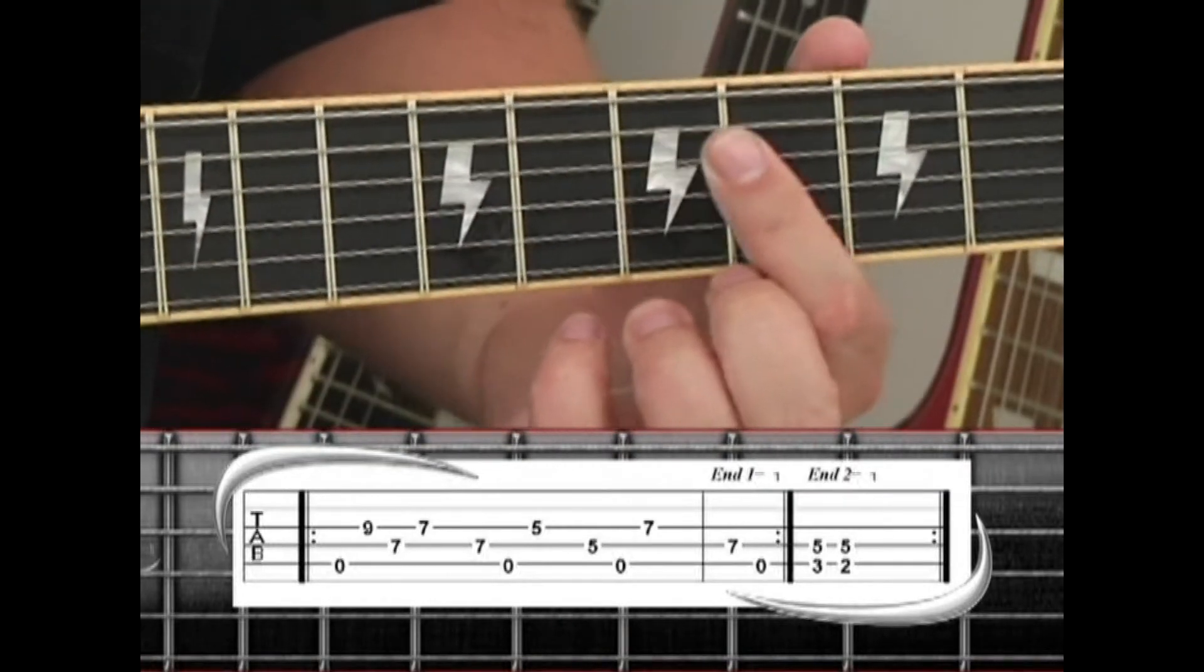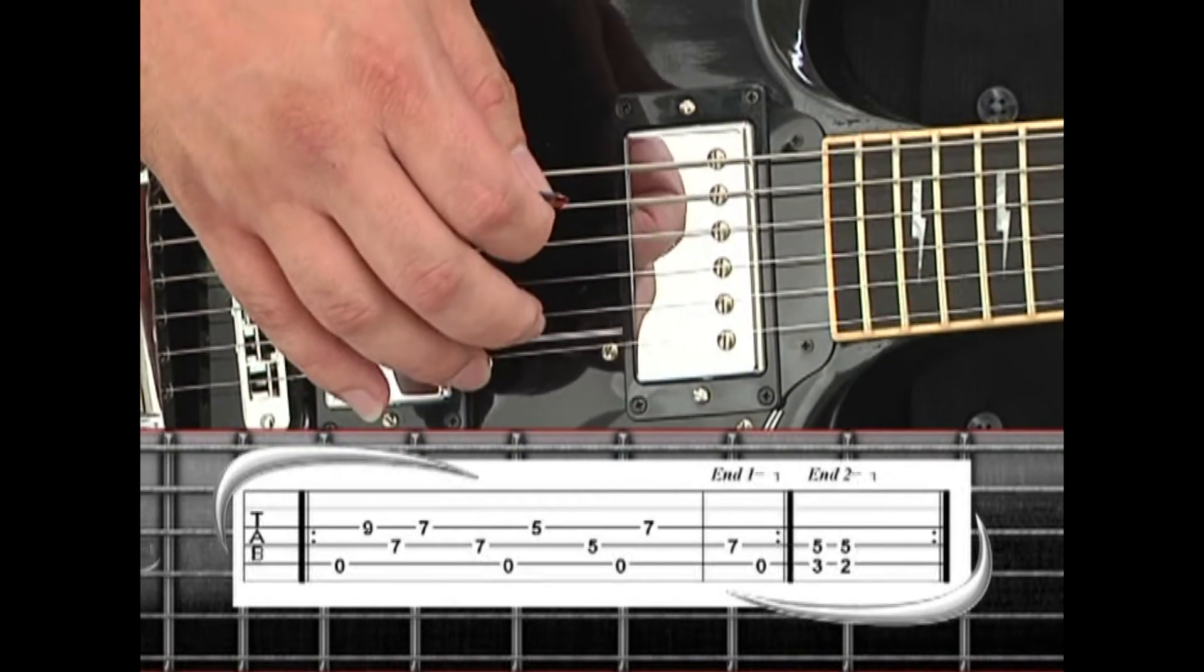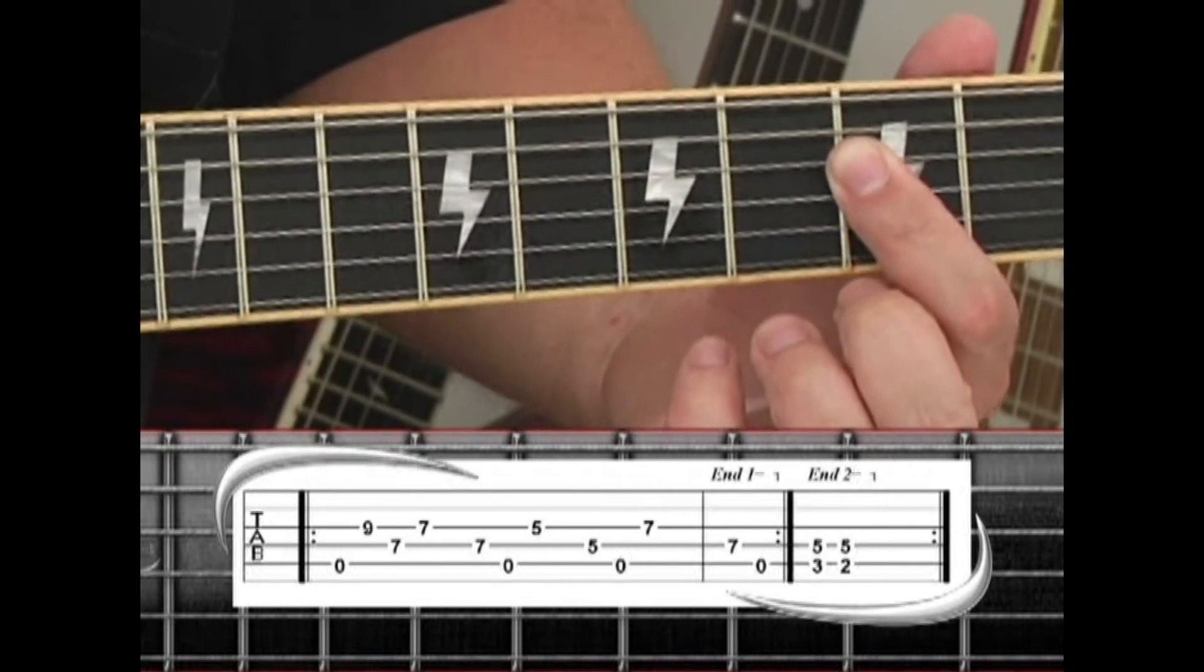Drop the bar down to the fifth fret, and pick strings three, four, and five. Then play the third string seven.